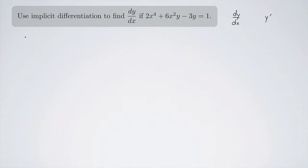Okay, so we're going to take the derivative. First I'll just rewrite the function here. 2x^4 + 6x^2y - 3y = 1.